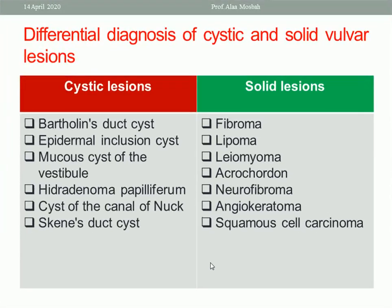The differential diagnosis of cystic and solid vulvar lesions: cystic lesions include Bartholin duct cysts, epidermal inclusion cysts, mucous cysts of the vestibule, hidradenoma papilliferum, cysts of the canal of Nuck, and Skene duct cysts. Solid lesions include fibroma, lipoma, leiomyoma, acrochordon, neurofibroma, angiokeratoma, and squamous cell carcinoma.